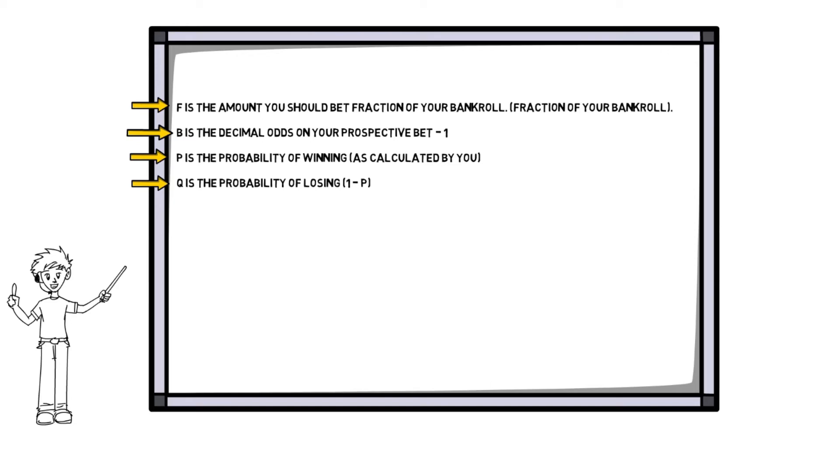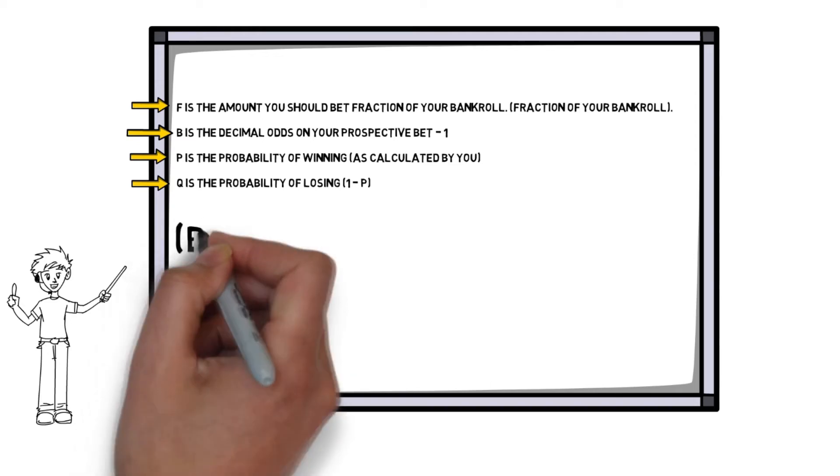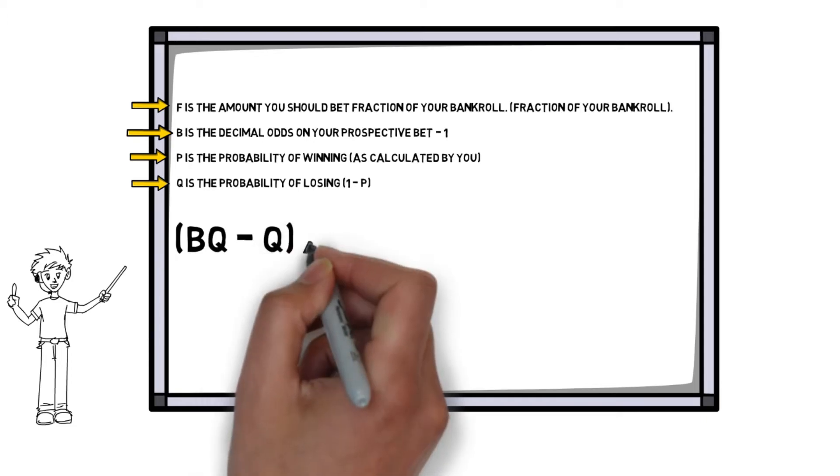If we then took this example of a bet where the decimal odds are 4.0 and the probability of the bet winning is 35%, we can apply the relevant figures to the equation as follows.